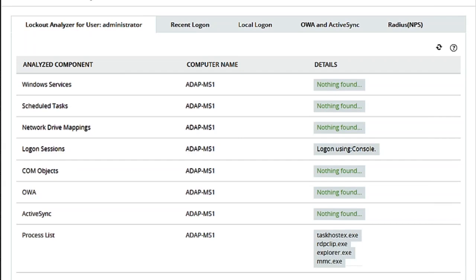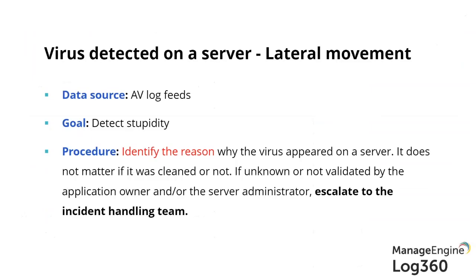Using event IDs 4740 and 4625 in AD Audit Plus, you can spin a security story about lockouts. These two event IDs let you look at eight different places where an account could be configured. If the account is being used as a logon on a console, in one of the processes, or in a network drive mapping — just log in to that box, update the credentials, and fix the problem. That's the administrative benefit of auditing lockouts.